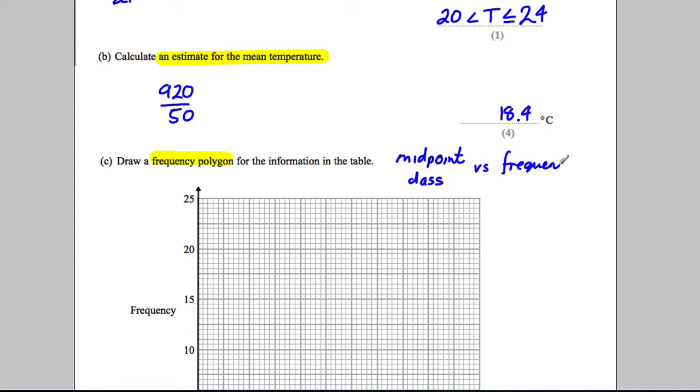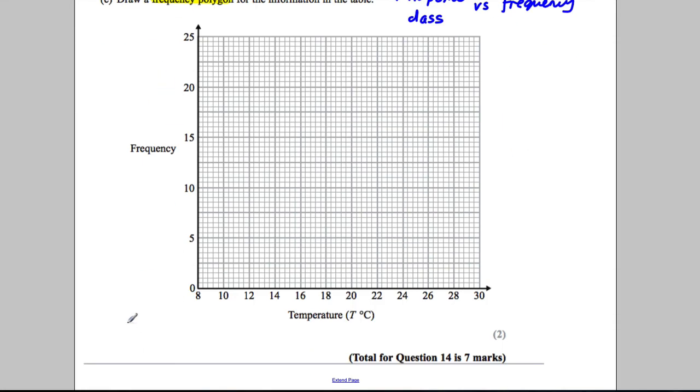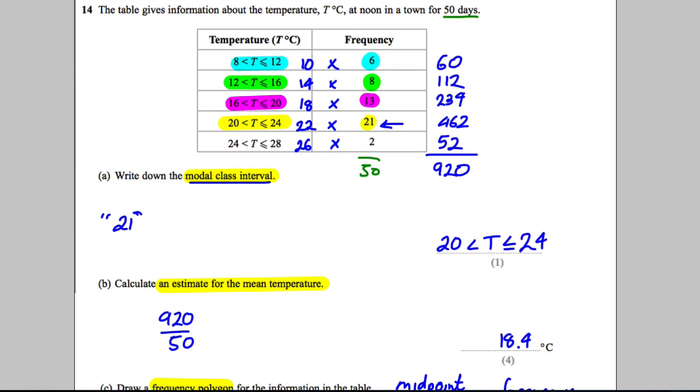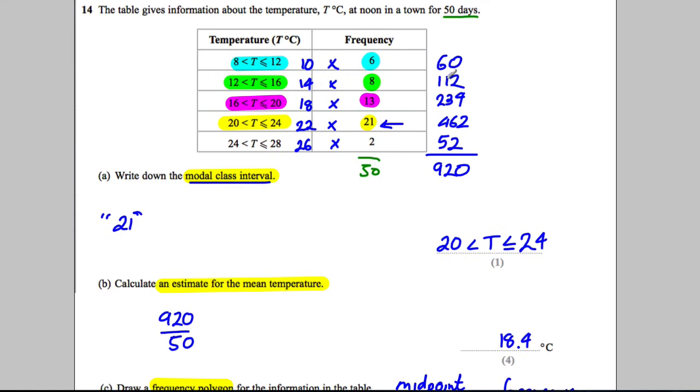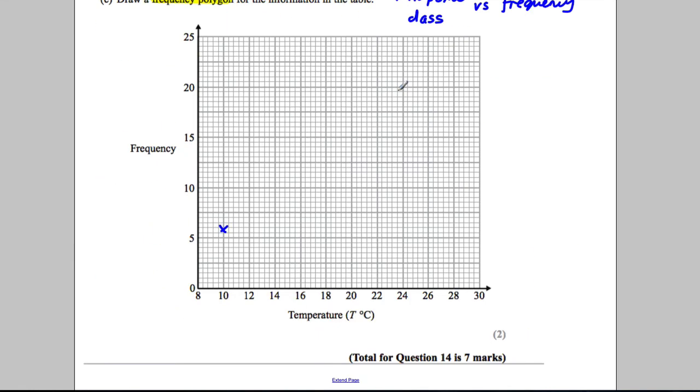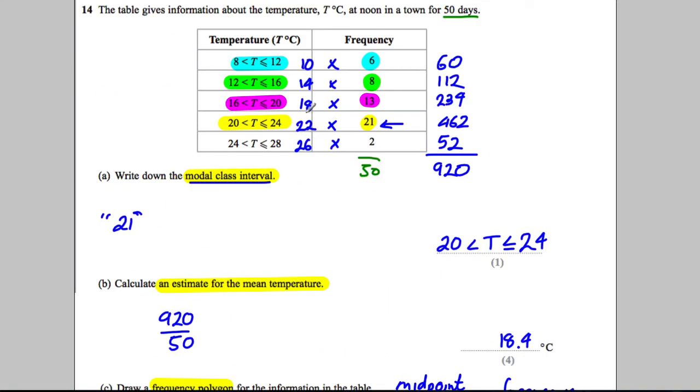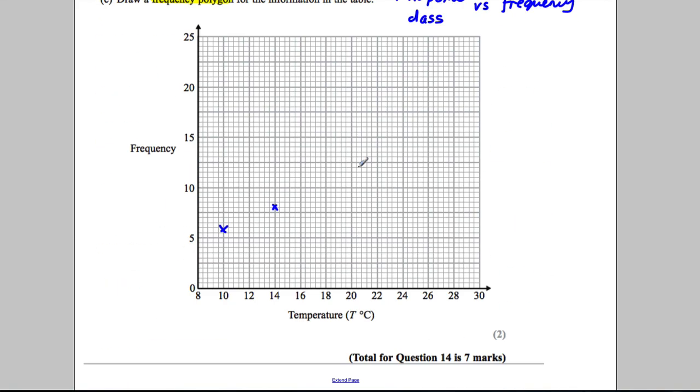Now, luckily, we're told the frequency along here, and we're told the temperature here. So all we've got to do is plot 10 versus 6, so 10 across and 6 up would be here. And then we're going to plot 14 and 8, which would be here. Then we're going to plot 18 and 13, which would be here.